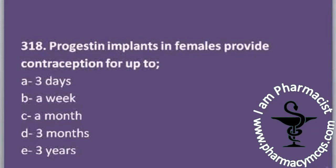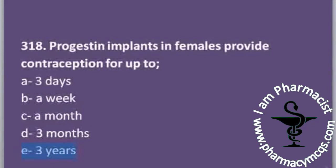Progestin implants in females provide contraception for up to 3 years. There is also an injection of medroxyprogesterone that provides contraception for up to 3 months. The correct option here is E.